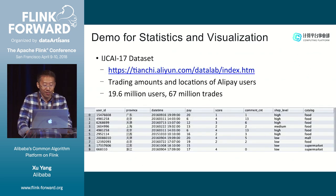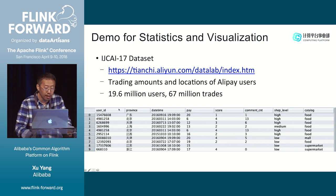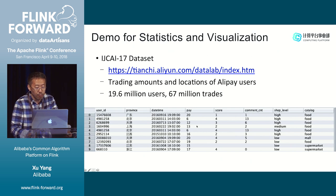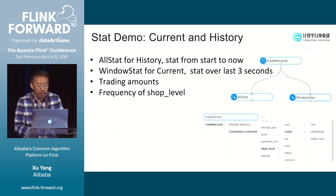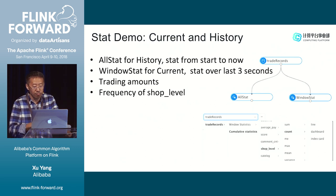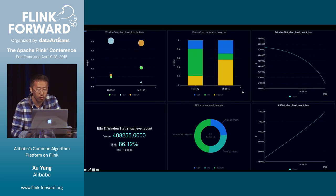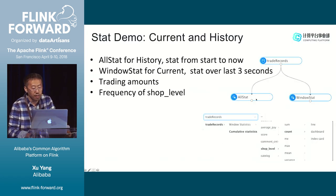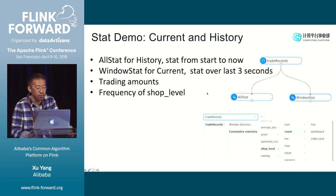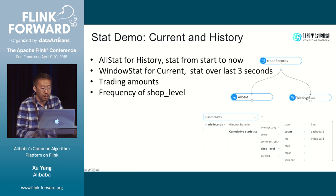Here we show a demo using trading amount and location data. The columns include user ID, province, time, payment amount, shop score, comment count, shop level, and catalog. We will show the concept of current versus history. The data stream is linked to two functions: auth data for history (data from start to now), and window state for the current window, for example the last second. We focus on the trading amount and the frequency of shop level — which has three values: high, mid, and low.